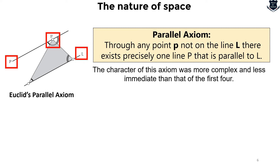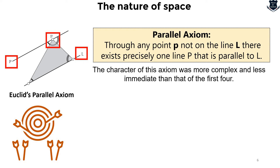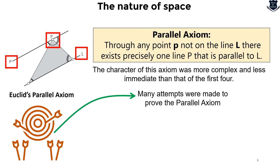The character of this fifth axiom was more complex and less immediate than that of the first four, and mathematicians began a long struggle trying to show that it must be a logical consequence of the first four axioms. Attempts intensified through the centuries, reaching a crescendo in the 1700s, but all ended in failure. One useful equivalent of the axiom that emerged was that similar triangles of different sizes exist; another equivalent, still taught to every school child, is that angles in a triangle add up to 180 degrees.